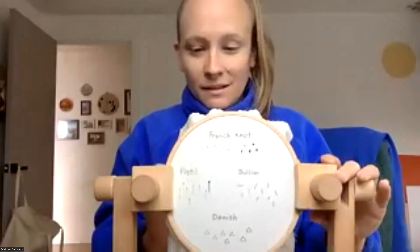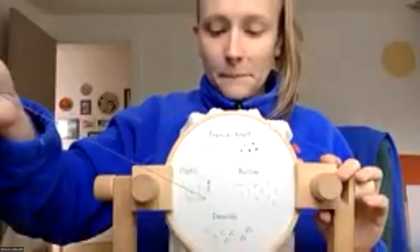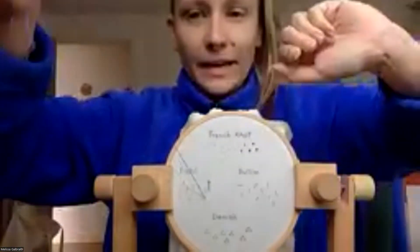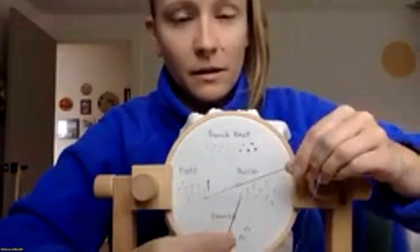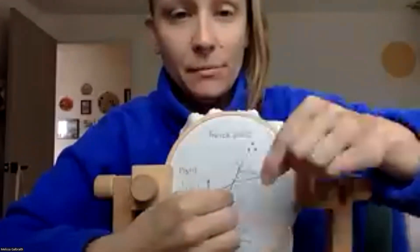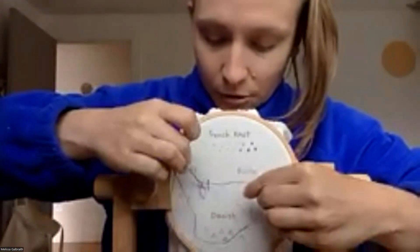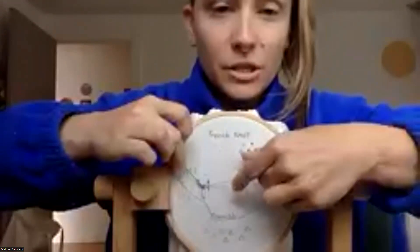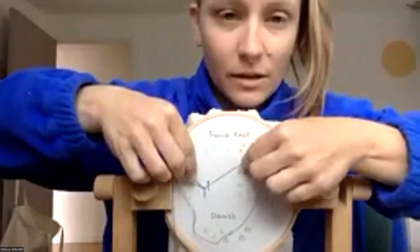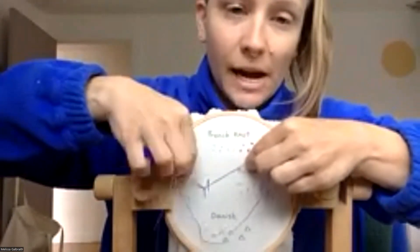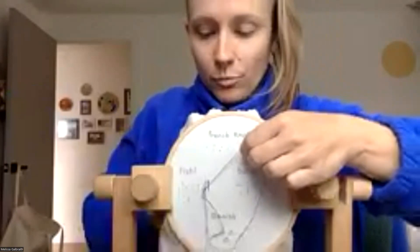Let's do that again. Bring your needle up right where you want the bottom of your straight stitch to go. Lay your hoop flat on the table, pinch your thread about four or five inches away. Wrap that thread around your needle three times and bring your needle back down into the fabric right where you want the top of that pistol stitch to go — the top of your straight line. Gently tug your thread so it's tightly wrapped around your needle and that straight stitch is also flush with the fabric. Then push your needle on through.